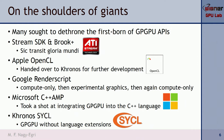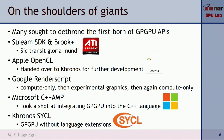Khronos also introduced SYCL — I think it's 2015 or 2014 — which is essentially the CUDA of OpenCL. It is a compilation model that builds upon OpenCL. There will be a talk about it shortly, so I won't go into much detail, but it's practically C++ and everything good about C++, and you can run it on anything that supports OpenCL.